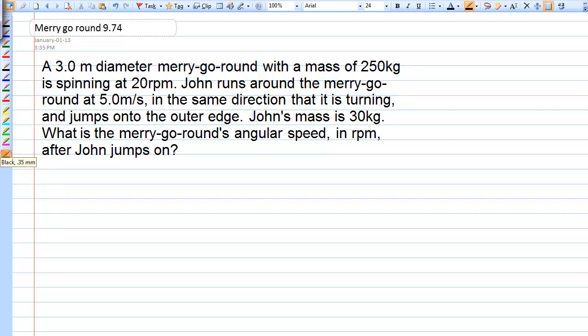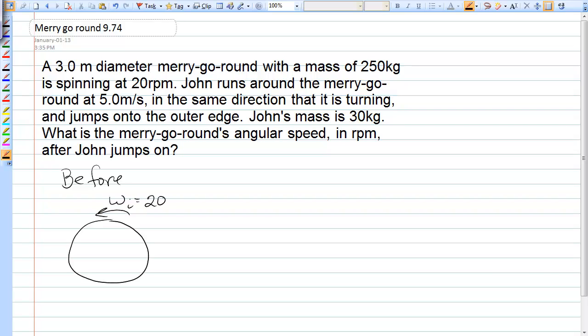So initially, the merry-go-round itself has angular momentum because it is rotating at 20 RPM, so that's its initial angular velocity. And the fact that John is running perpendicular to the radius of the merry-go-round actually gives him angular momentum as well with respect to the center of the merry-go-round.